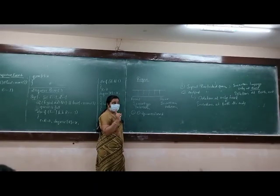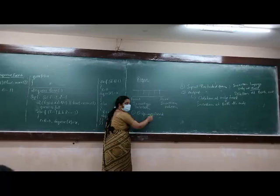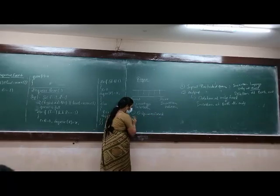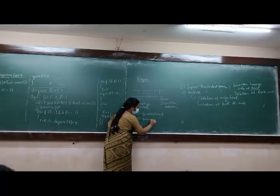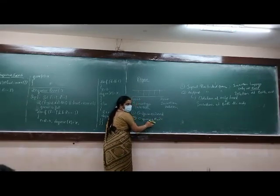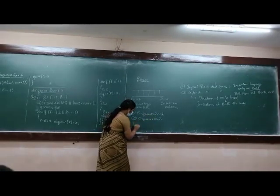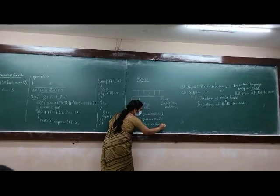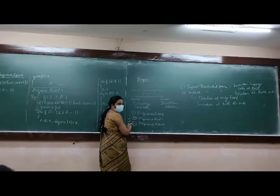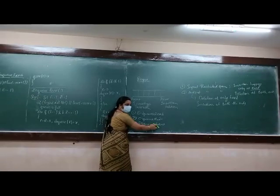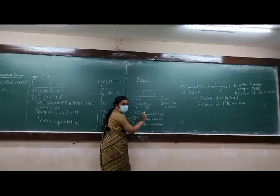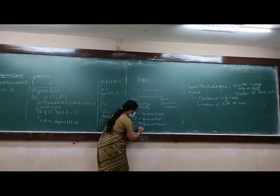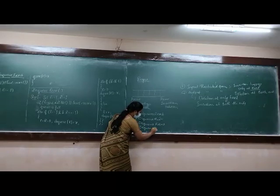In input-restricted deque, insertion at only the rear end. If you want insertion at the rear end, NQ of rear end — insertion at the rear end. Second type: NQ of rear end. We have seen this. DQ of front end — deletion at front end. And insertion at rear end. DQ of rear end.